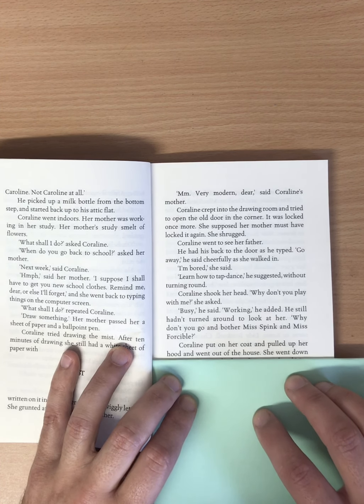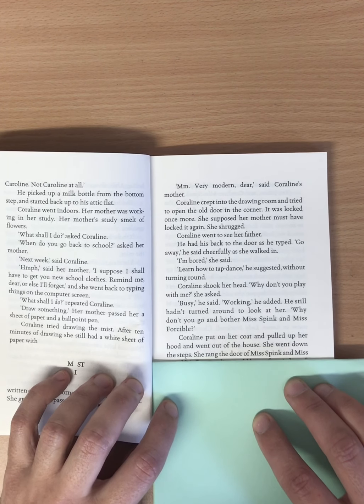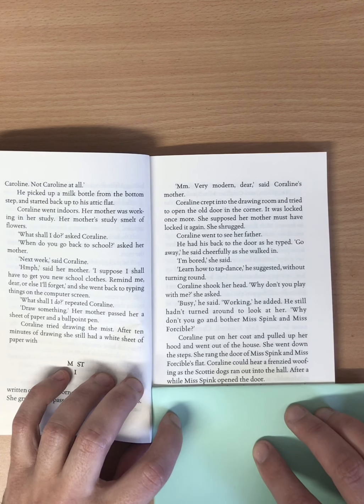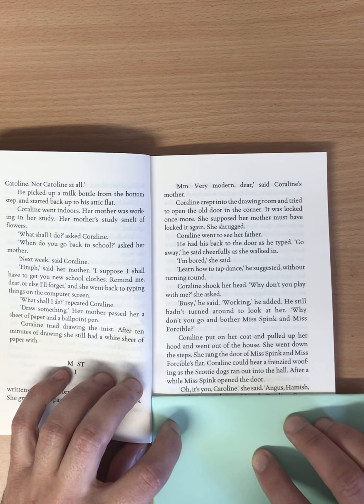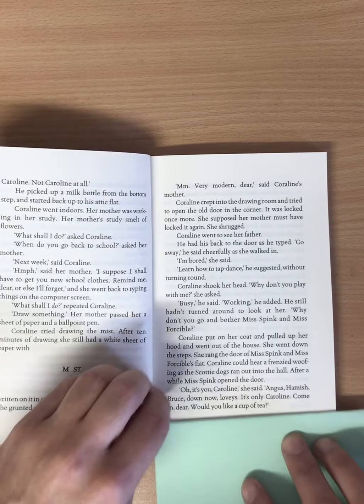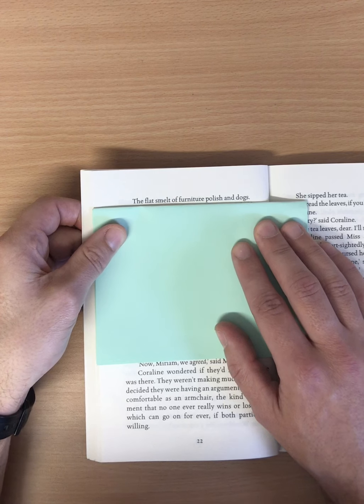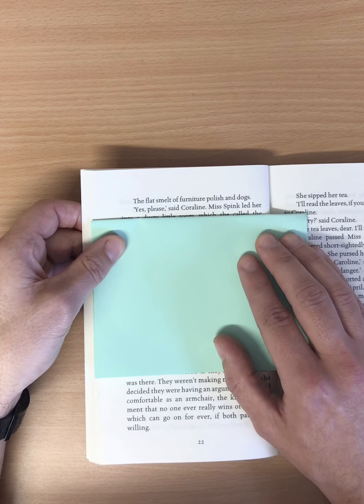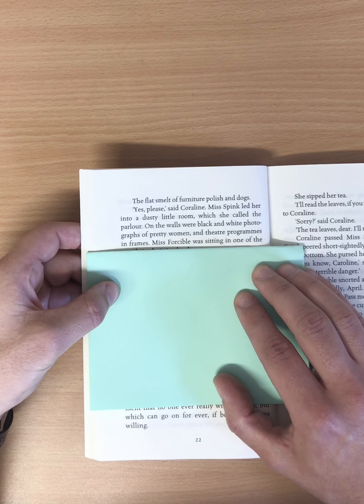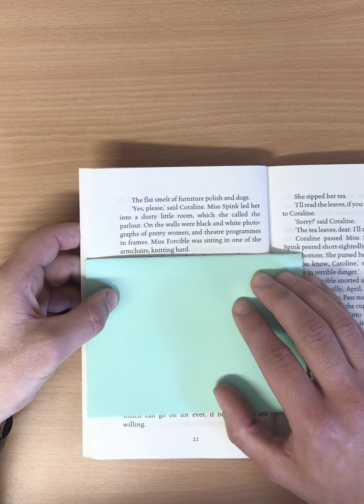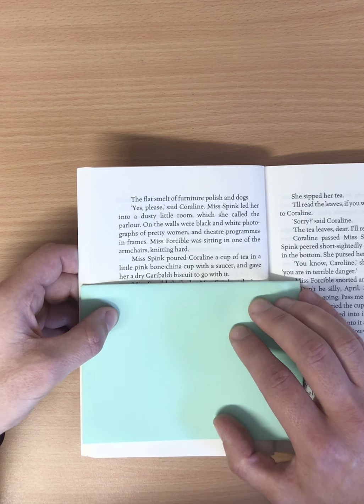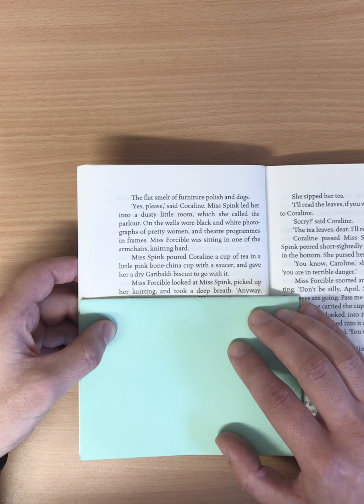Coraline put on her coat and pulled up her hood and went out of the house. She went down the steps. She rang the door of Miss Spink and Miss Forcible's flat. Coraline could hear a frenzied woofing as the Scotty dogs ran out into the hall. After a while, Miss Spink opened the door. Oh, it's you, Caroline, she said. Angus, Hamish, Bruce. Down now, lovies. It's only Caroline. Come in, dear. Would you like a cup of tea? The flat smelt of furniture polish and dogs. Yes, please, said Coraline.